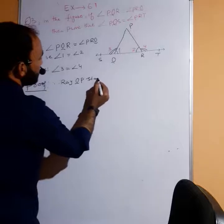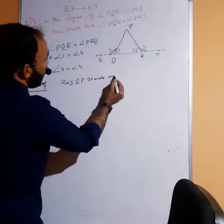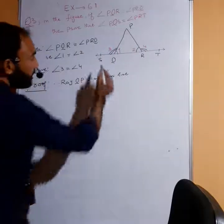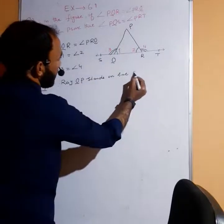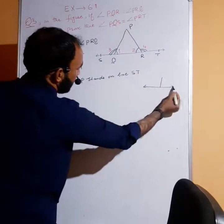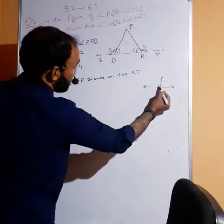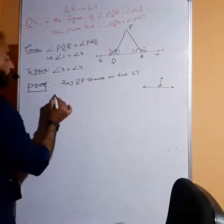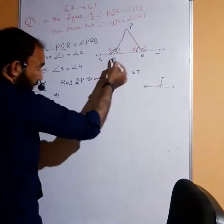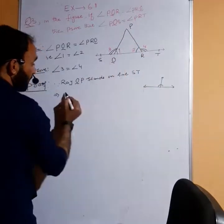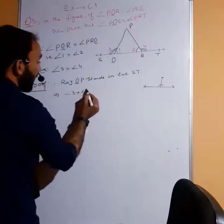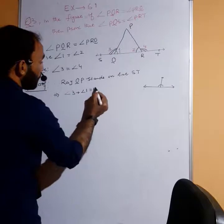The ray stands on a line. If the line ST is raised, the adjacent angles form a linear pair of 180 degrees. So angle 3 plus angle 1 equals 180.